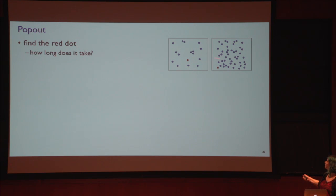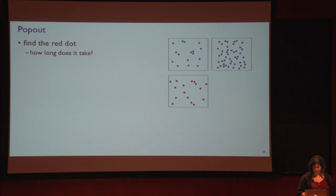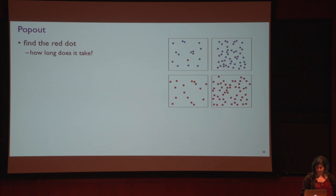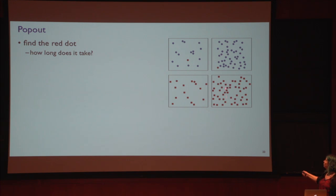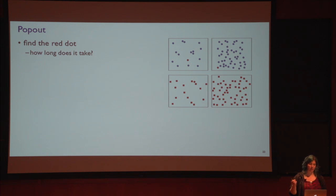Now let's try a different case — look for the red dot among red squares. You were able to notice the red dot amidst the red squares — it wasn't quite as easy as the red dot with blue dots, but you were able to find it reasonably quickly. So we've seen pop-out from color and pop-out from shape.